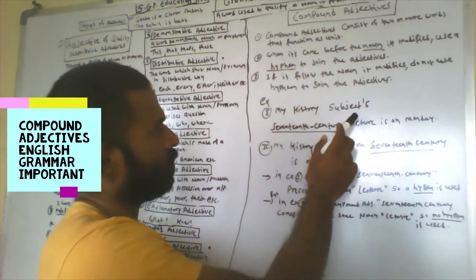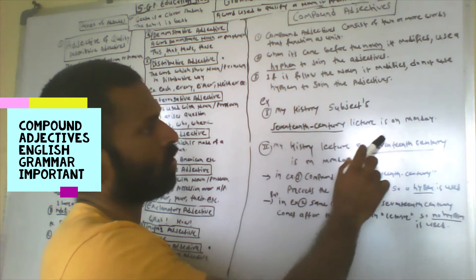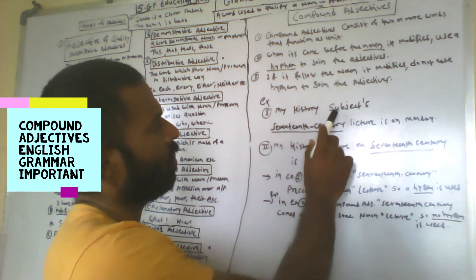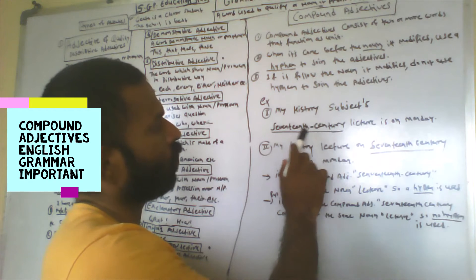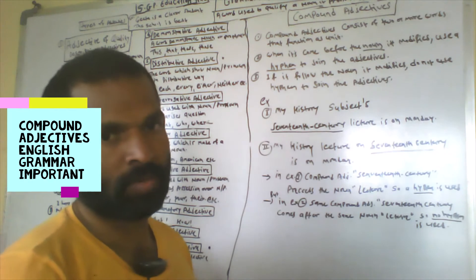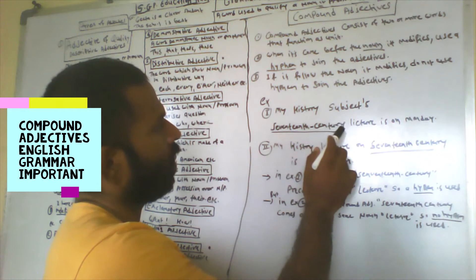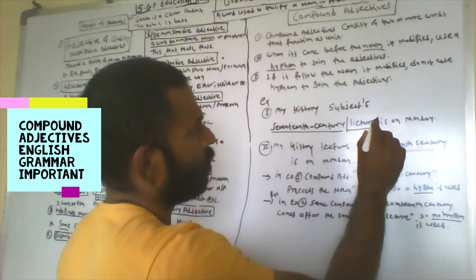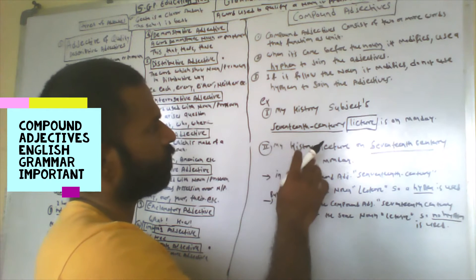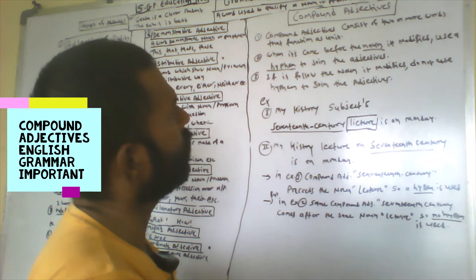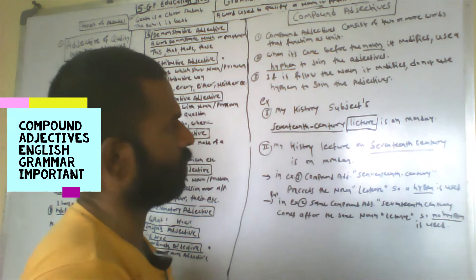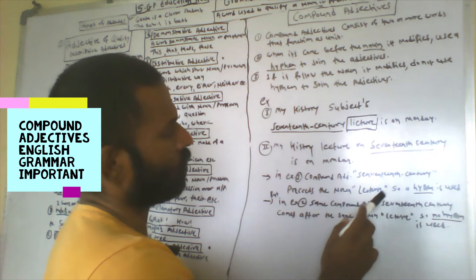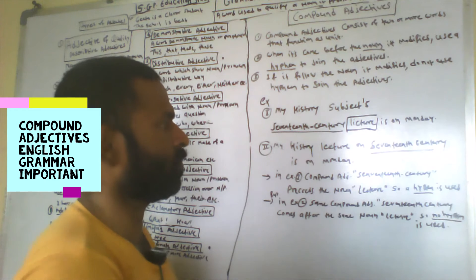For example: 'My history subject's 17th-century lecture is on Monday.' Here, '17th century' is the compound adjective. Both these compound adjectives come before the noun 'lecture,' so a hyphen is used. The compound adjective '17th century' precedes the noun 'lecture,' so a hyphen is used in example number one.